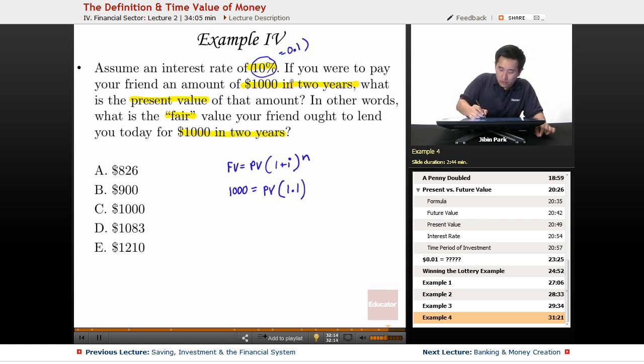It's going to be two years, so $1000 divided by 1.1 to the second power. So $1000 divided by 1.1 squared equals the present value. I don't have a calculator, so I'll leave it like that.